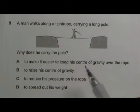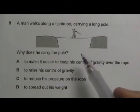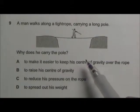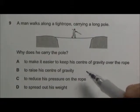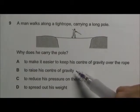We have a man that is walking along a tightrope carrying a long pole. The question is why does he carry the pole? We can use elimination method to approach this question. Let's skip A and go on to option B first.